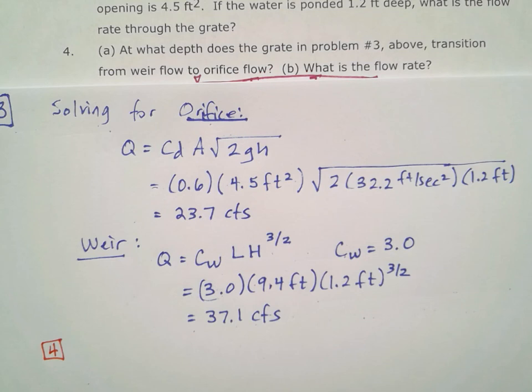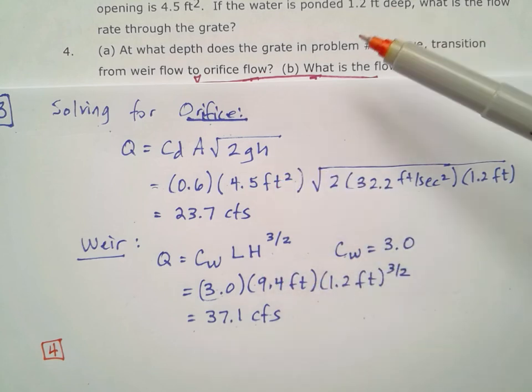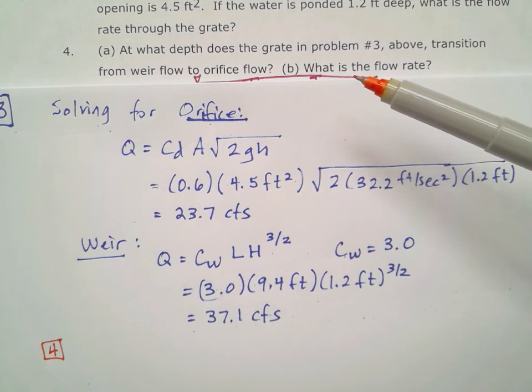Problem 4 of the FE Hydraulics Chapter 6 homework continues the work from problem 3, where we found the inlet flow rate as if it behaved as an orifice or a weir. Now we're going to figure out at what depth that transition occurs from weir flow to orifice flow.